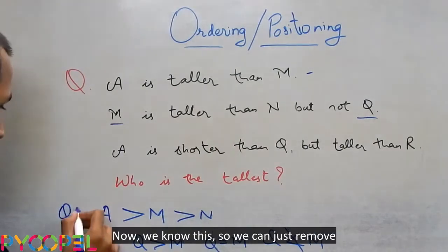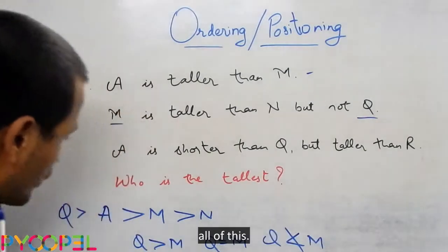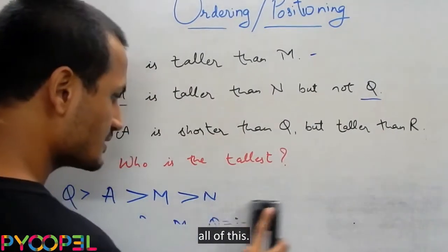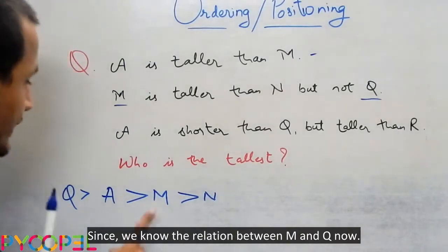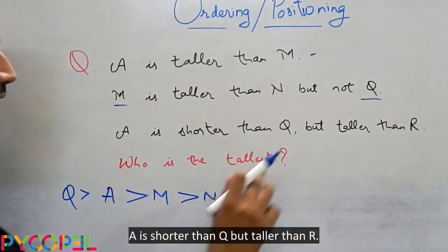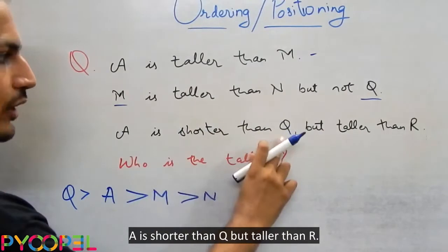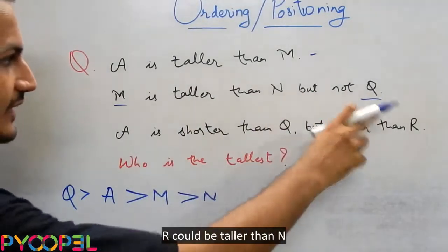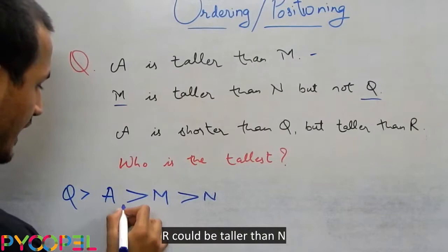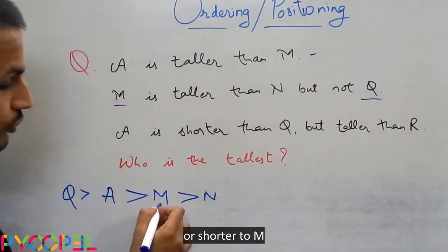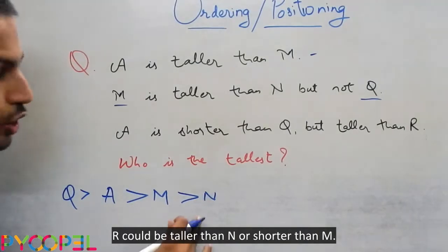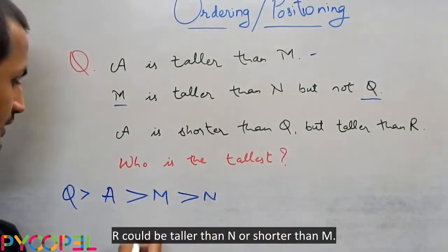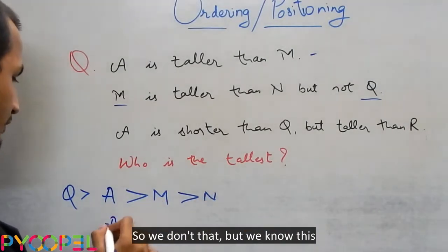Now A is shorter than Q. So we know this. So we can just remove all of this, since we know the relation between M and Q now. A is shorter than Q but taller than R. Now R could be taller than M or shorter to M. R could be taller than N or shorter than N. So we don't know that, but we know this.